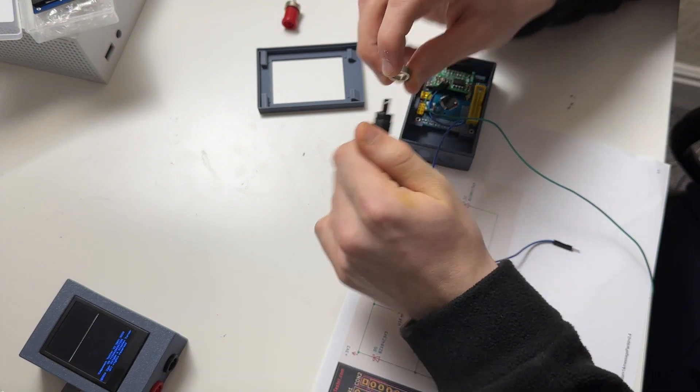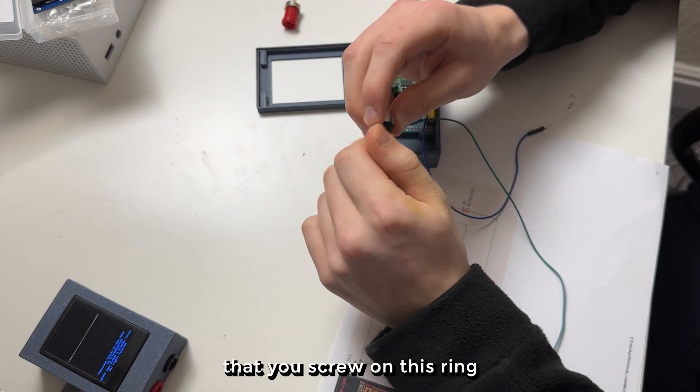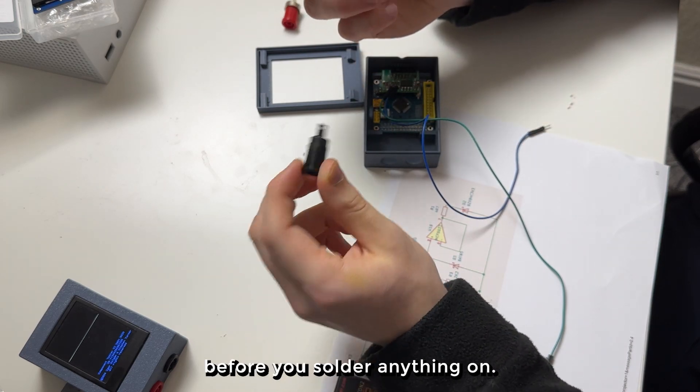Then you can place in your two banana sockets. So just make sure that you screw on this ring before you solder anything on.